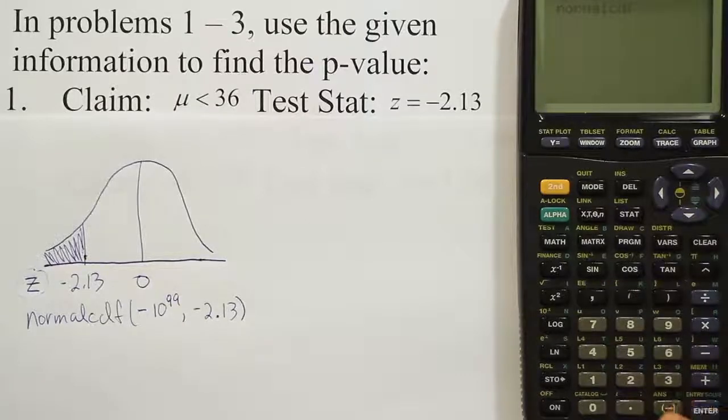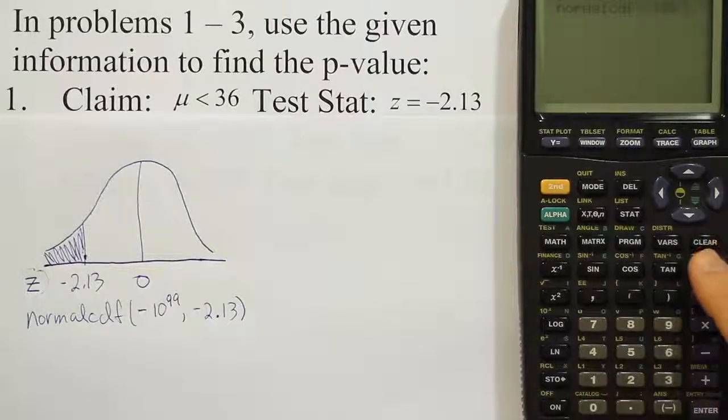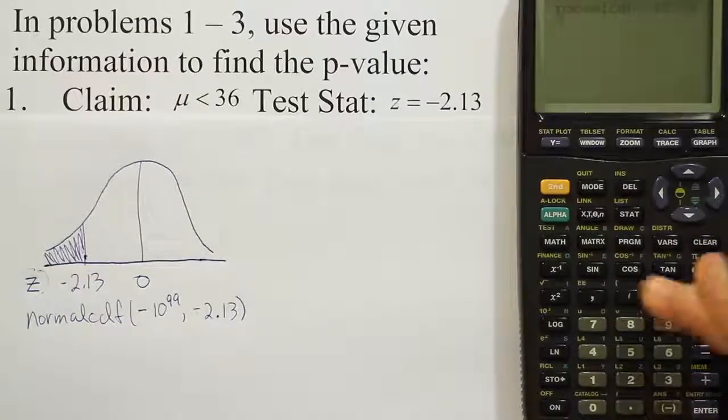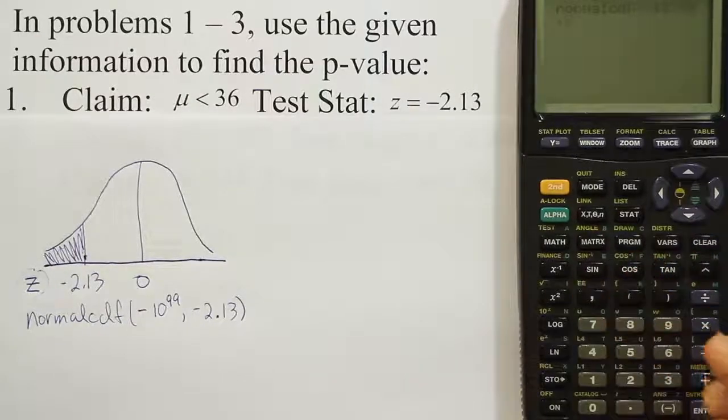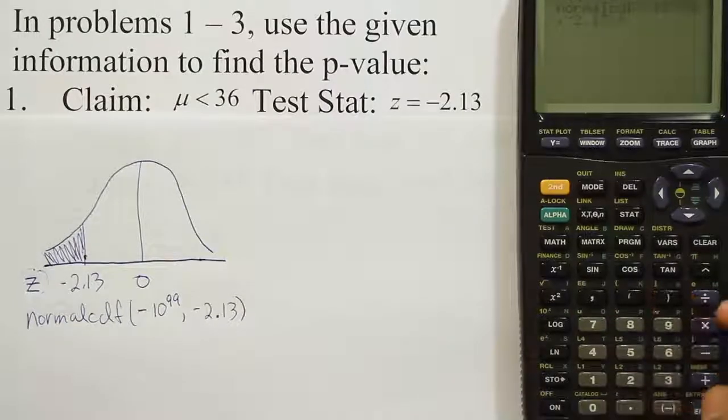Once we're there, we give it the minus, using this key for the negative, minus 10 to the 99th power. Comma, minus 2.13. Close up the parenthesis, hit enter,